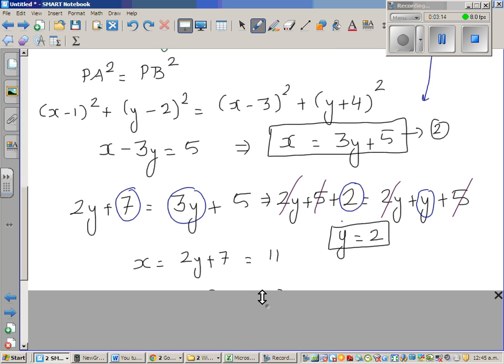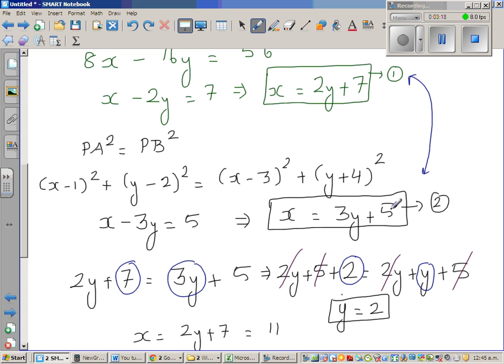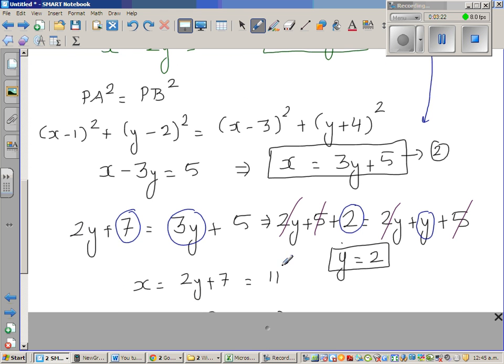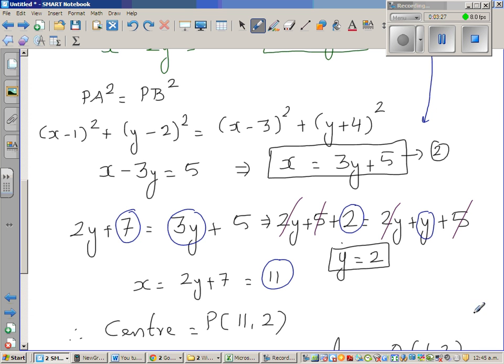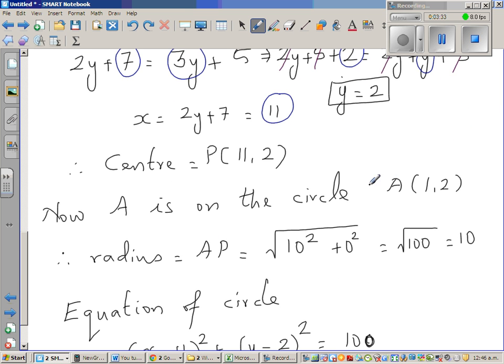So if y equals 2, we know x is 2y + 7. So if y is 2, x is 11. So the coordinates of the center are (11,2). Point A is on the circle with coordinates (1,2).